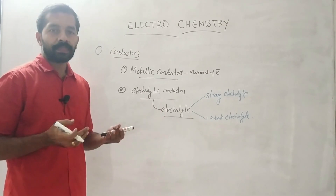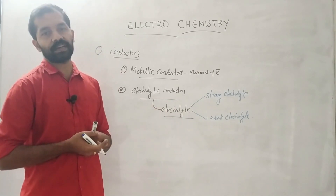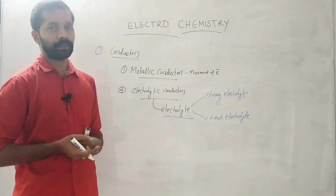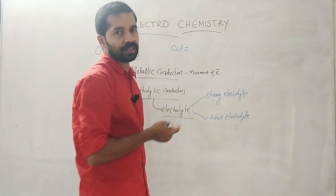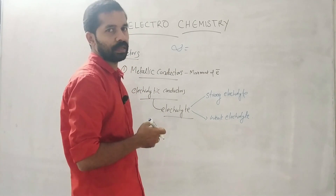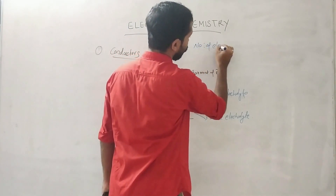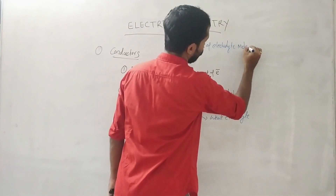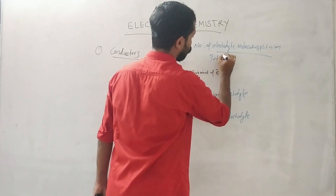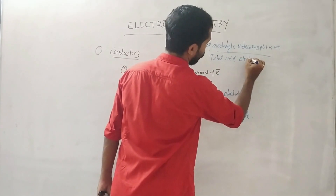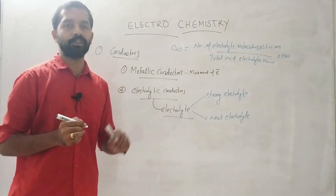Strong electrolytes are completely ionized, while weak electrolytes undergo only partial ionization. The degree of dissociation, alpha, is defined as the number of electrolyte molecules split into ions divided by the total number of electrolyte molecules. An alpha value of 100% means completely dissociated.